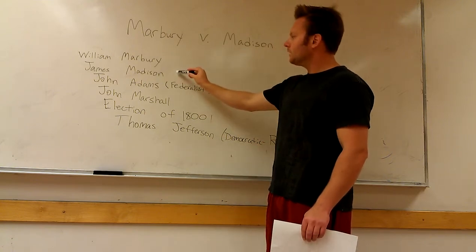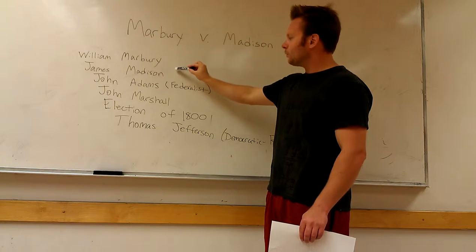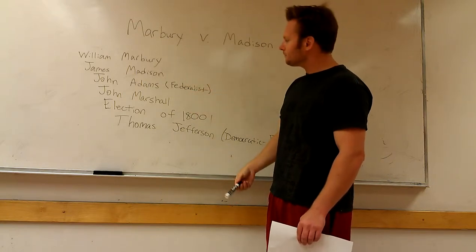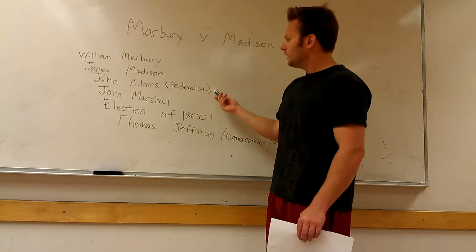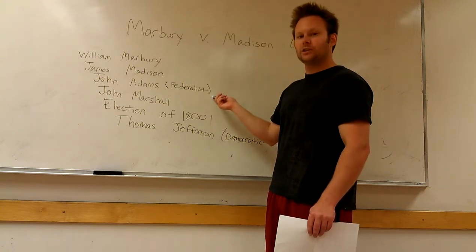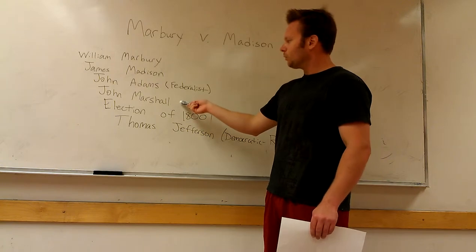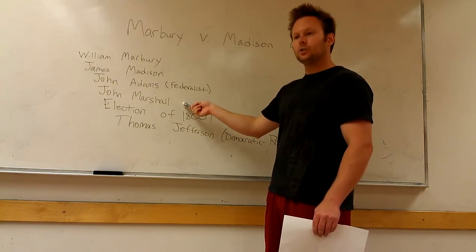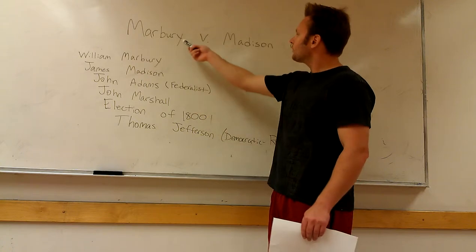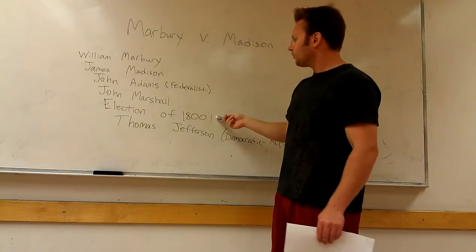James Madison is going to be the Secretary of State for the new administration of Thomas Jefferson. John Adams is a Federalist — he's the second President of the U.S. and he's leaving. John Marshall is the U.S. Supreme Court Justice at this time during this case. The election of 1800 and the changing of the administrations was really what caused a lot of complications in U.S. history.